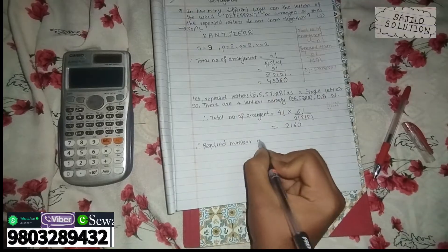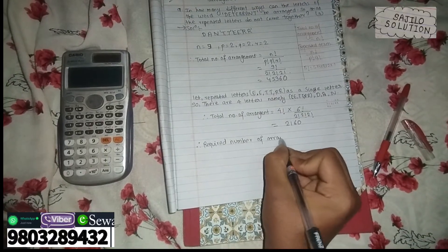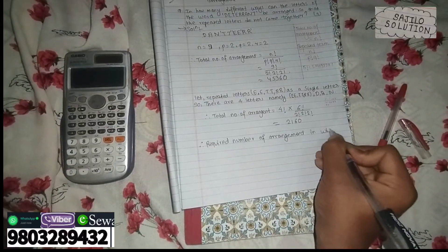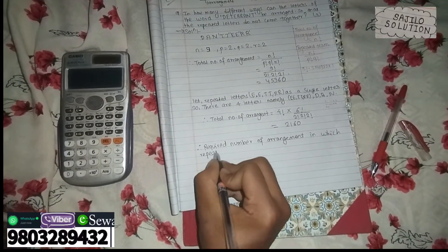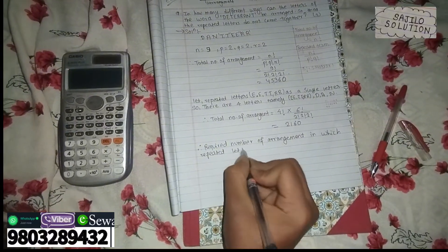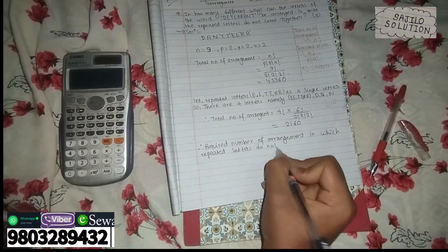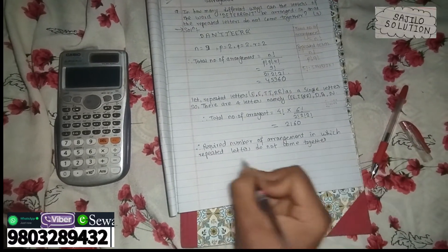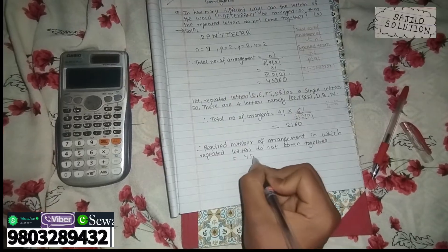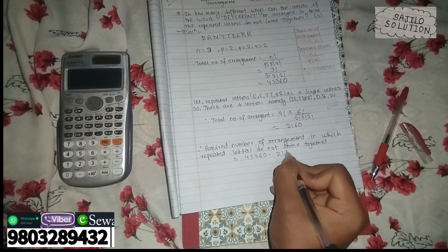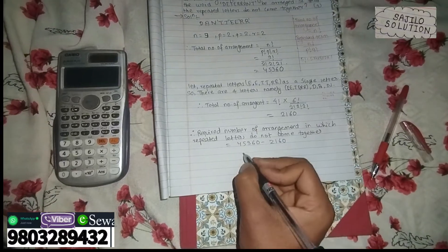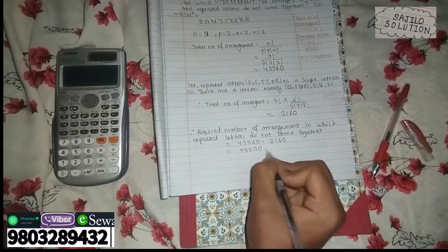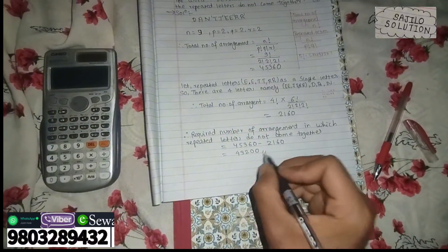The total number of arrangements where repeated letters do NOT come together is: total arrangements minus arrangements where repeated letters come together. That is 45,360 minus 2,160, which gives the final answer of 43,200.